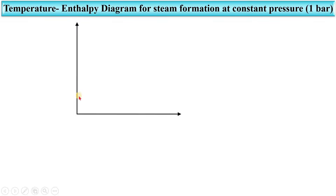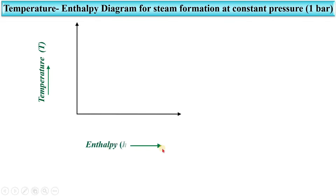In this diagram, temperature is on the y-axis and enthalpy is on the x-axis. Temperature is denoted by T whereas enthalpy is denoted by H.